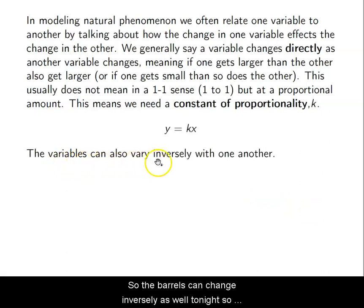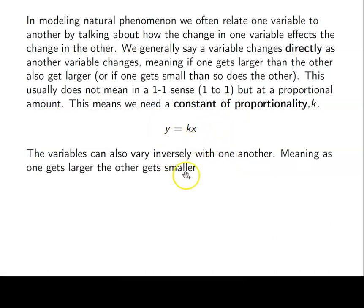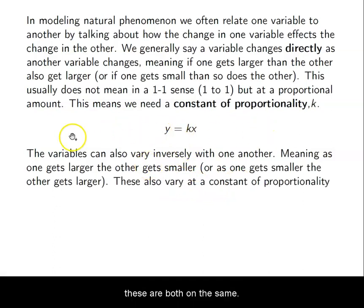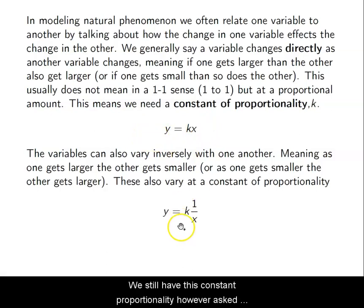The variables can change inversely as well. So here they vary directly, as x gets bigger, y gets bigger. Inversely means the opposite. As x gets bigger, y will get smaller. Or as one gets smaller, the other gets bigger. So if these are both on the same line, as far as fractions go, we still have this constant proportionality. However, x needs to be a reciprocal and needs to move down to the denominator.